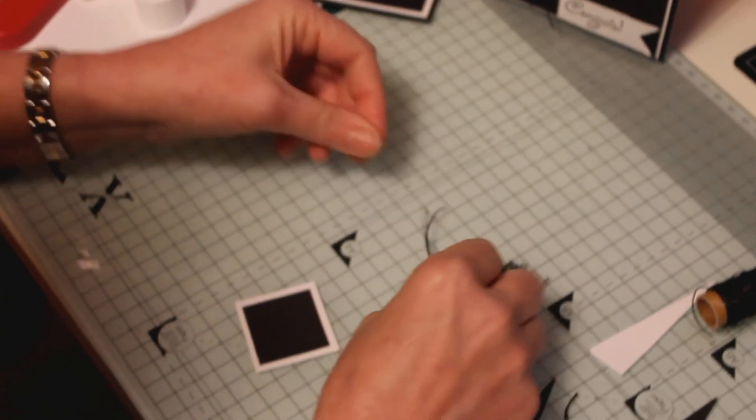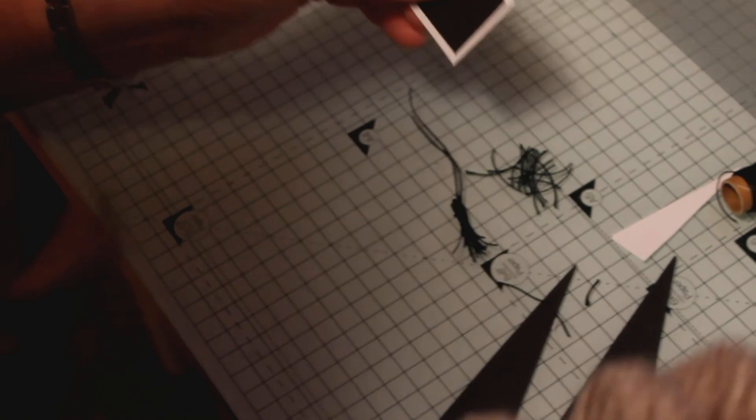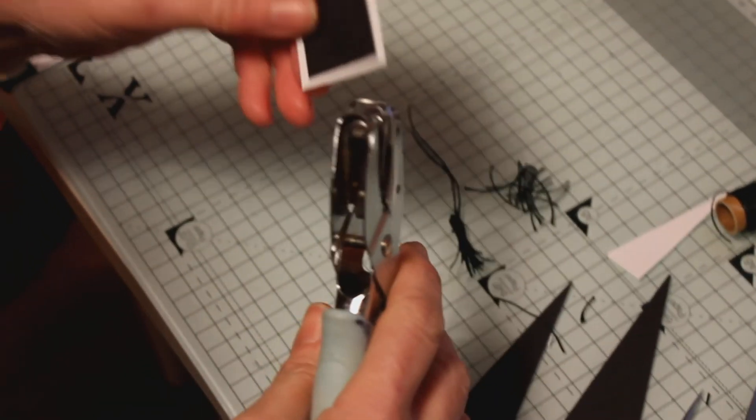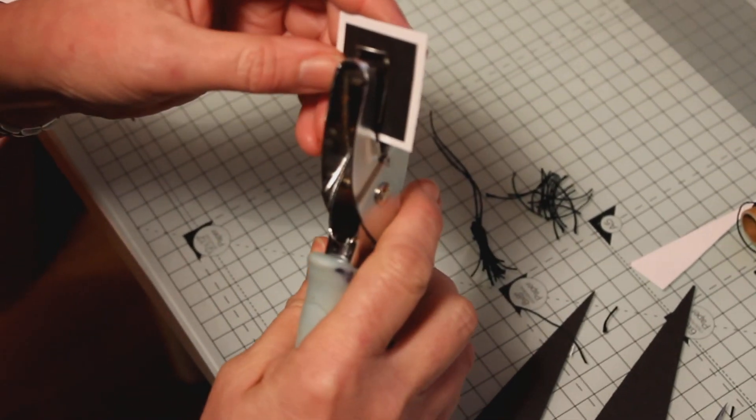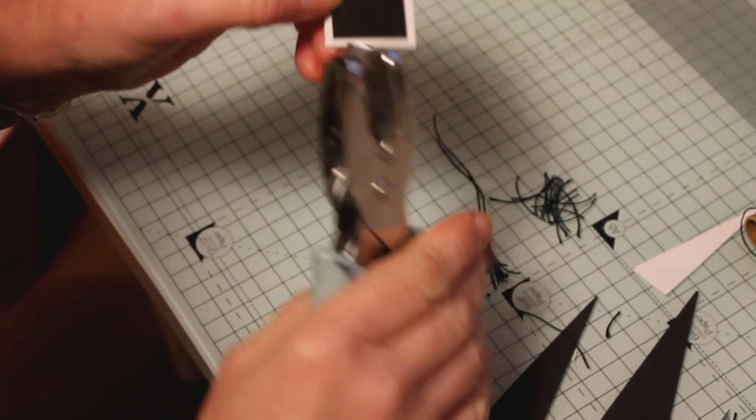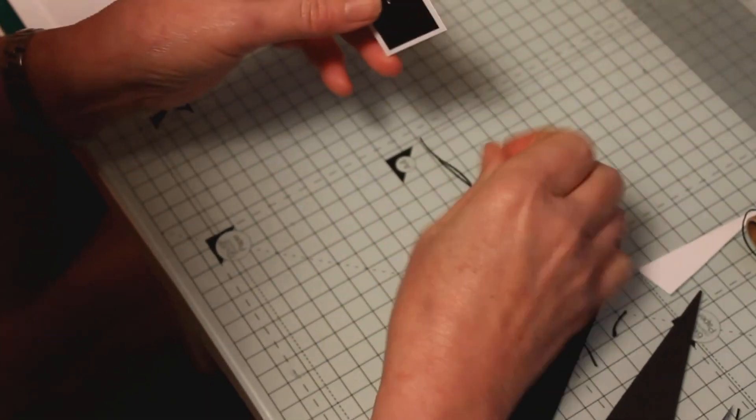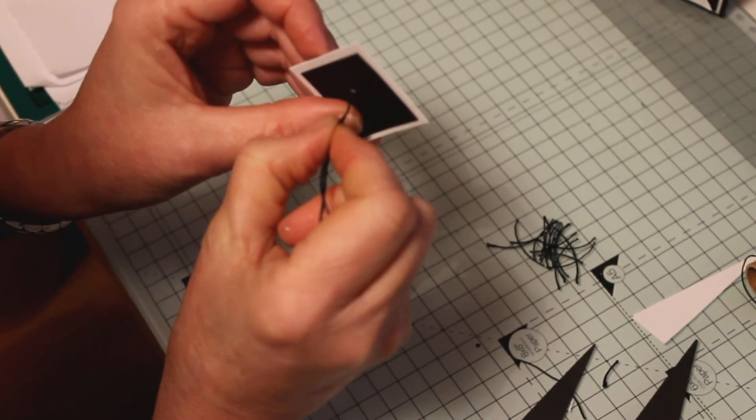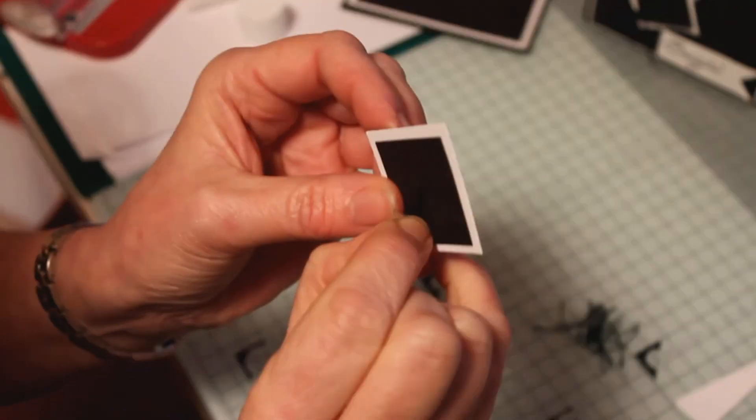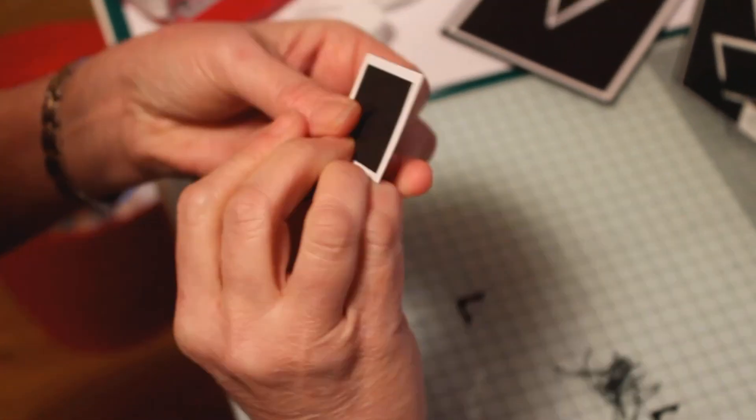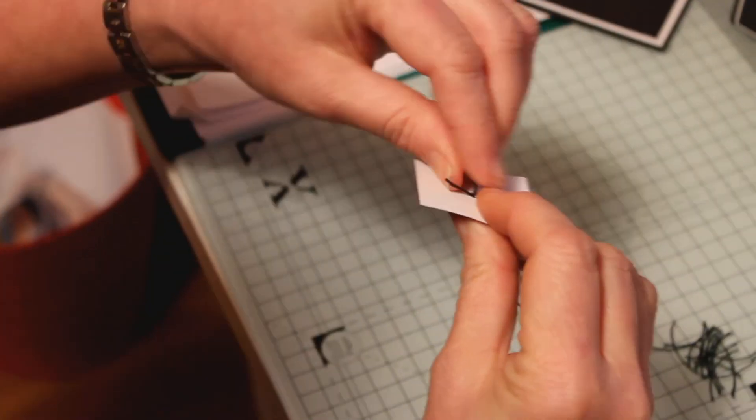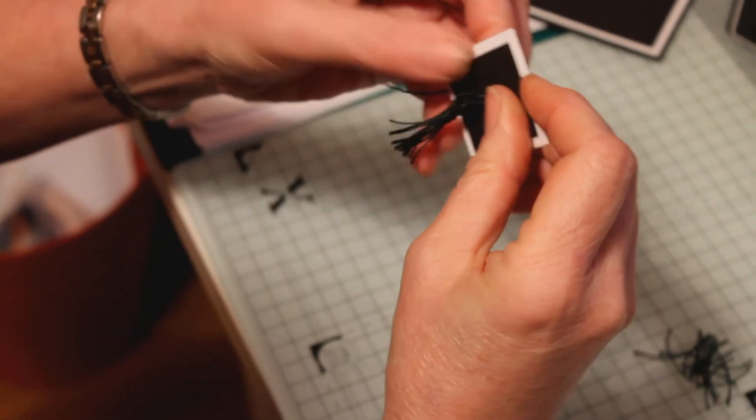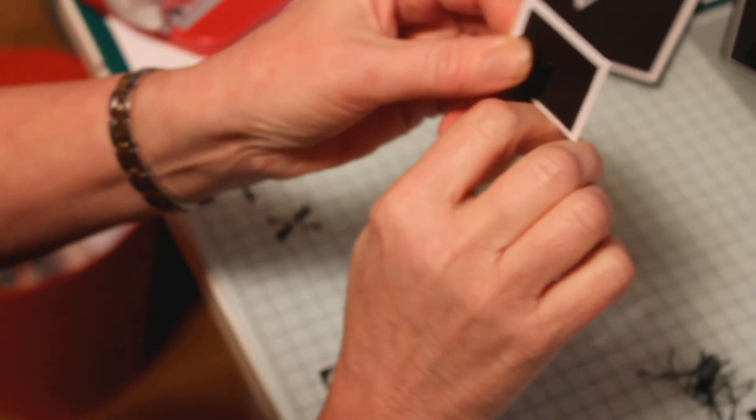And then what you do is you poke a hole in the middle. I'm just going to use this and eyeball that as well. Put a hole in the middle and then simply thread your pieces through. And then you pull it and you leave a little bit of length like that.